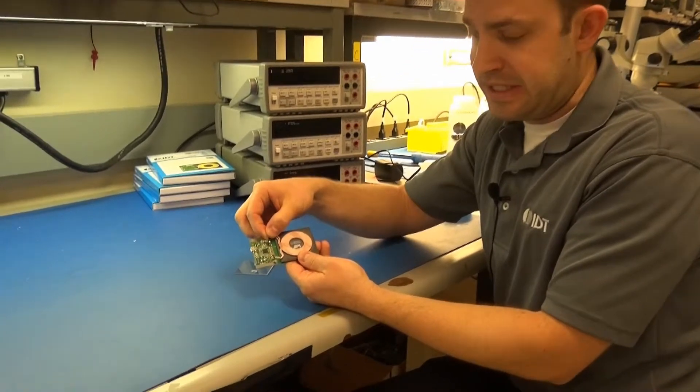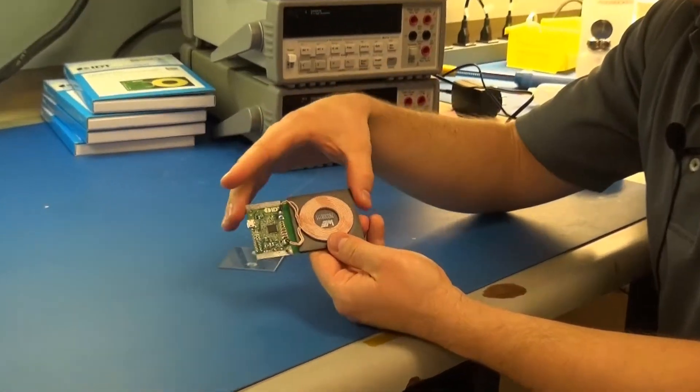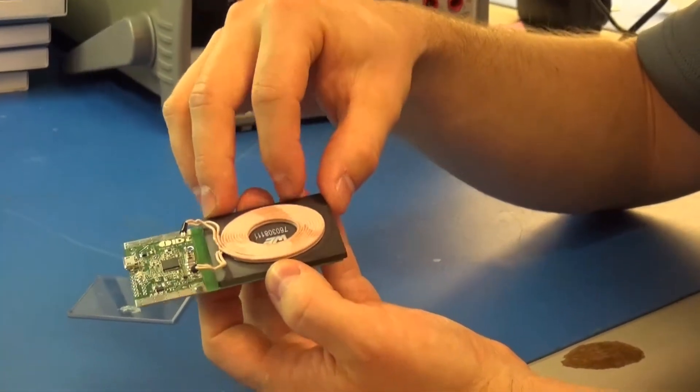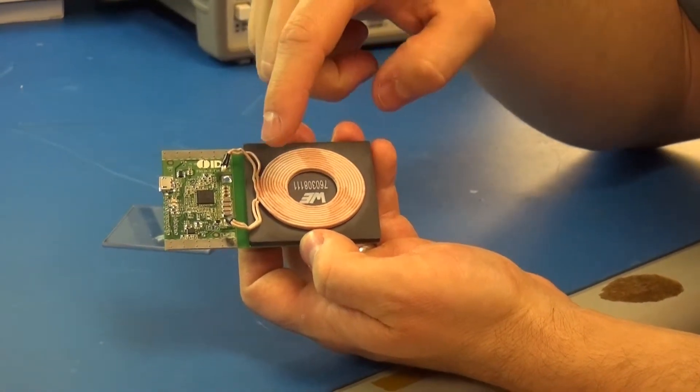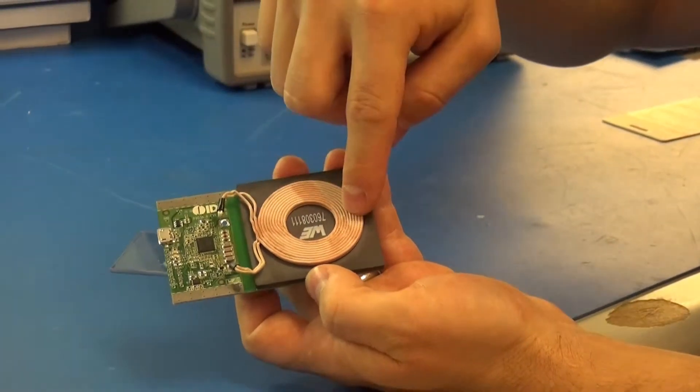You'll want to desolder the leads from the board and I've already done that here. The next thing is to actually pry the ferrite off of the board and this is stuck on the board with two glue dots. One located under the ferrite here and here.